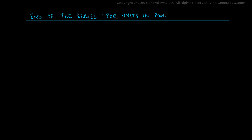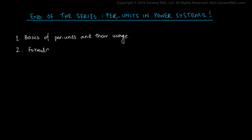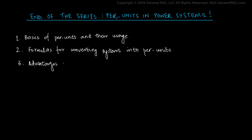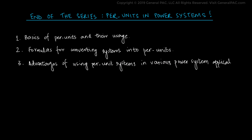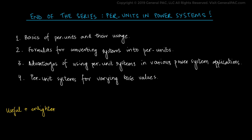This video marks the end of the series on per unit systems in power systems. Let's summarize what we have learned in the three topics of this series: 1. Basics of per unit systems and their usage. 2. Formula for converting systems into per unit systems. 3. Advantages of using per unit systems in various power systems applications. 4. Per unit systems for varying base values. We hope that you find this content useful and enlightening.